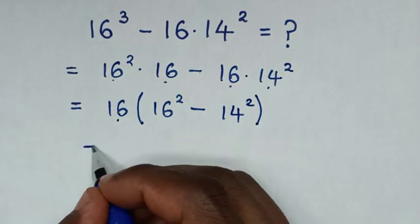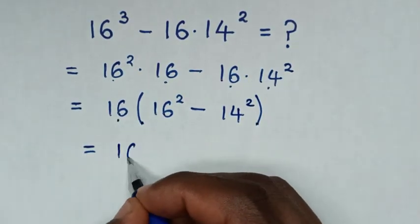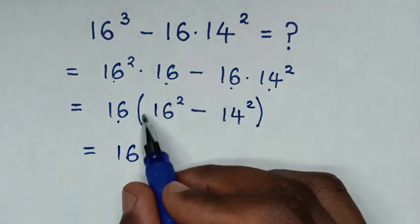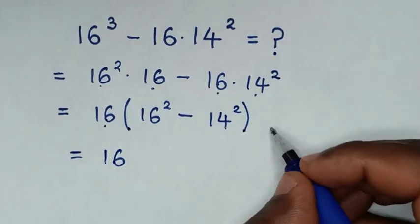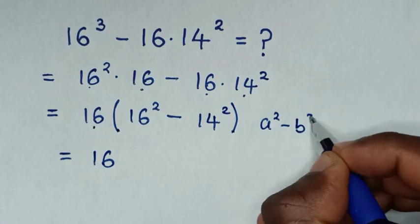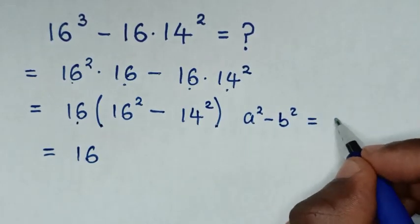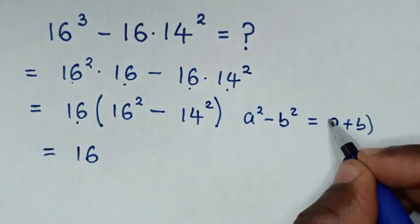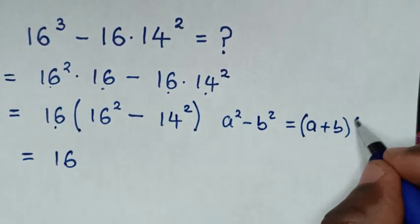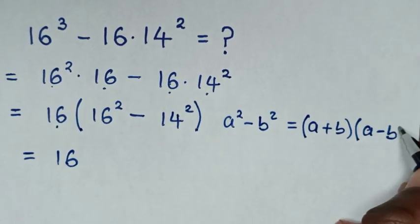Then in the next step, it will be equal to 16. Then from here, inside the bracket is in the form of a square minus b square, which is equal to a plus b bracket, then a minus b bracket.